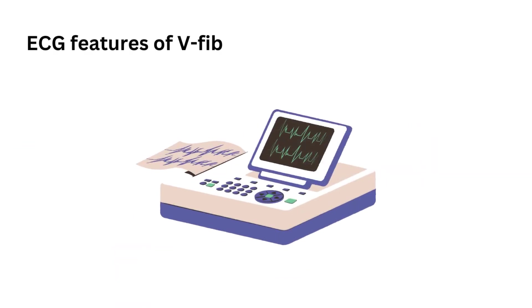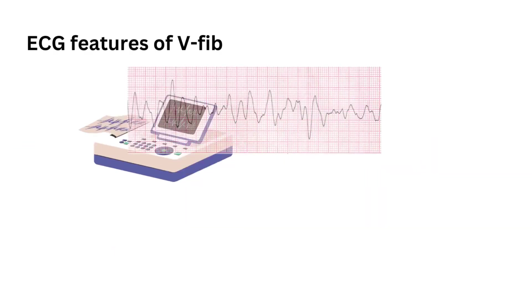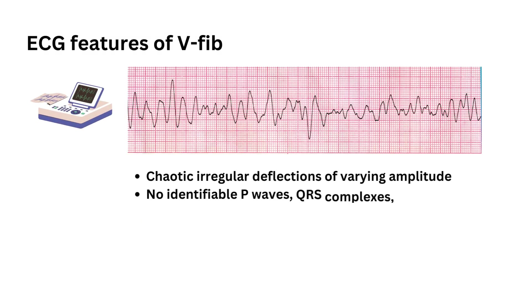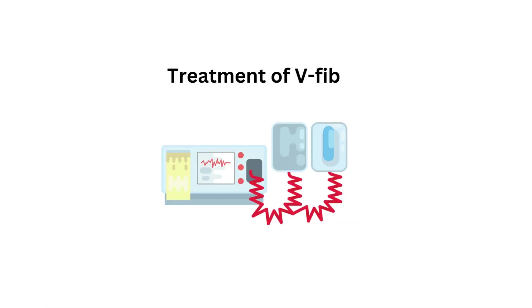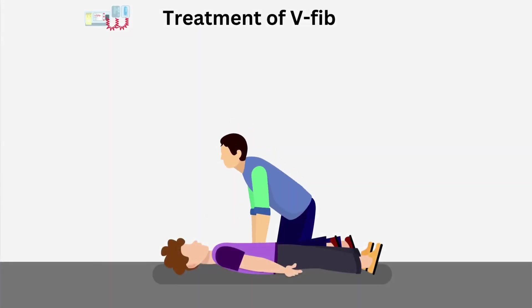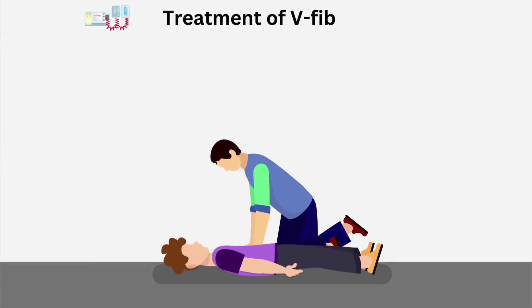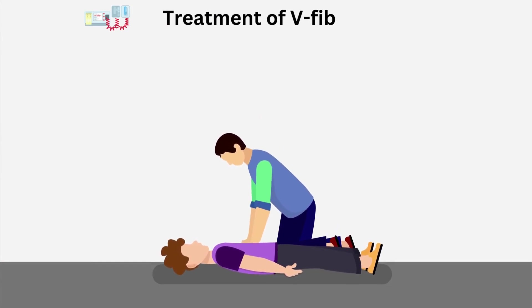Now let's look at the ECG features of V-Fib. First, there are chaotic, irregular deflections of varying amplitude with no identifiable P waves, QRS complexes, or T waves. The rate is between 150 to 500 per minute, and the amplitude decreases with duration.